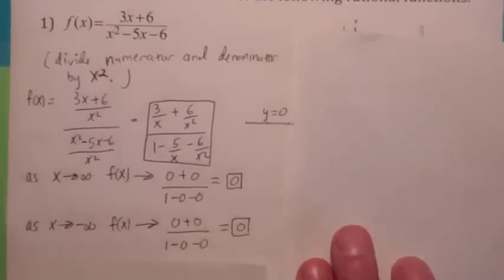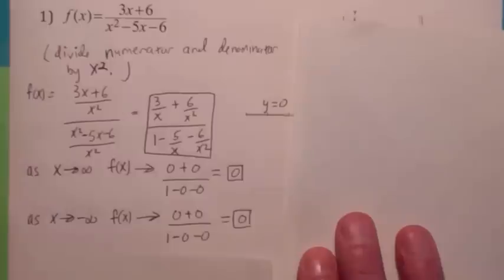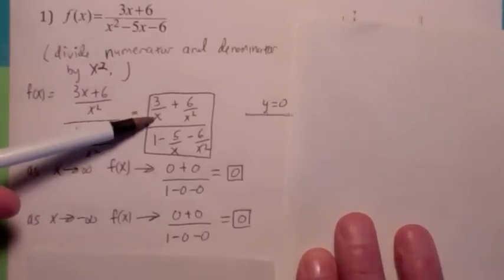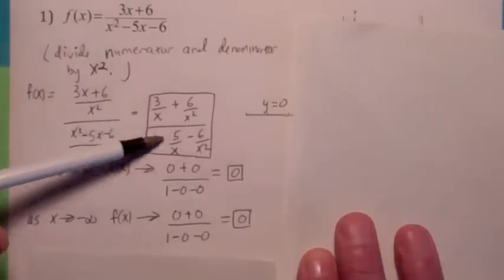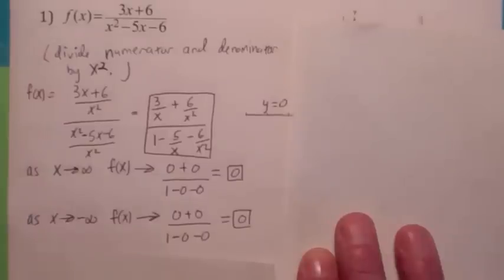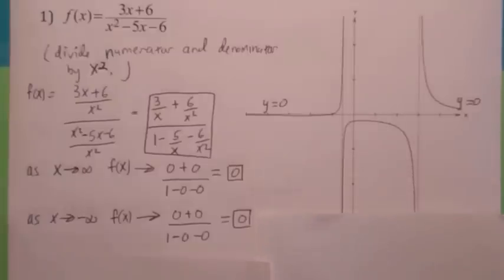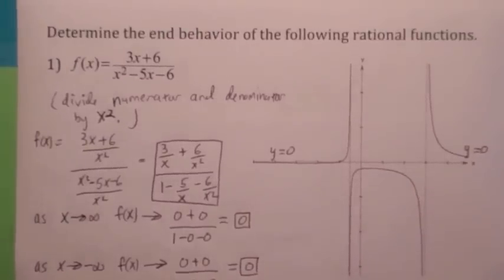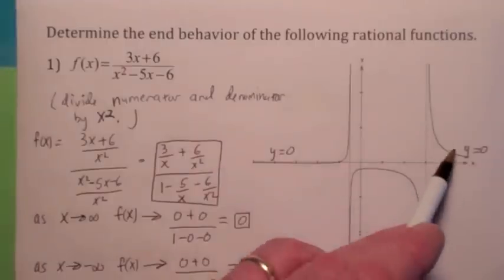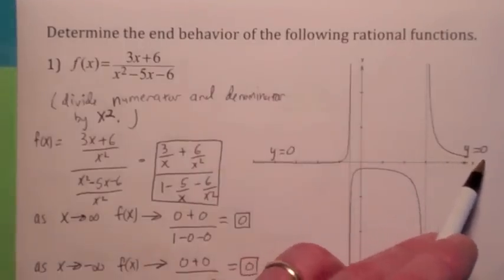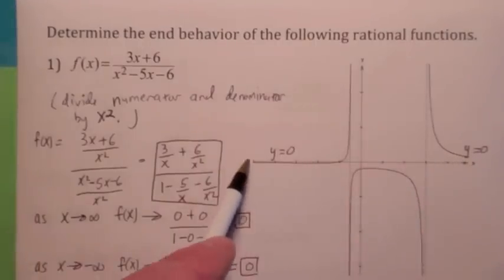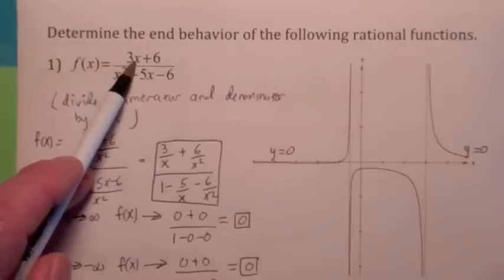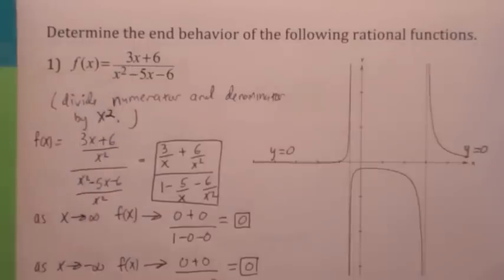Similarly, when x goes to negative infinity, you have the exact same situation. 3 over negative 100 is still getting close to 0. These are all getting close to 0 as x goes to the left. So that's why the horizontal asymptote is 0. The reason is because the degree of the numerator is less than the degree of the denominator.